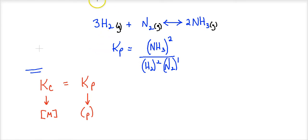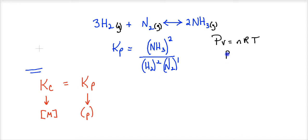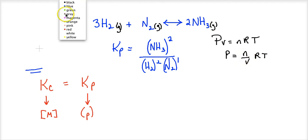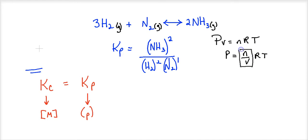Now we're going to look at the ideal gas law, PV = nRT, and put pressure by itself, because these are partial pressures inside. So pressure equals (n/V) times RT. I put n over V for a particular reason: n over V is moles over liters, which is a molarity. So from this derivation, we can clearly see that partial pressure equals molarity times RT.